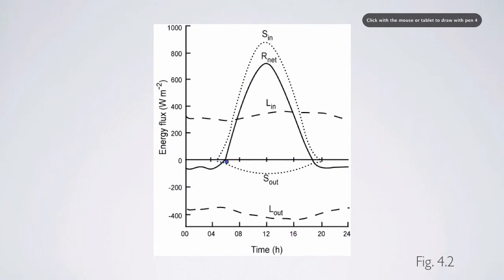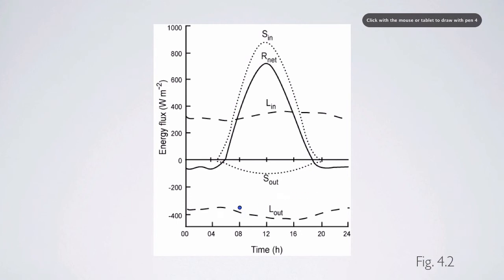The shortwave radiation coming out mirrors the amount of shortwave radiation coming in, but it's a lot lower — that's the amount of reflectance. The amount of longwave radiation going out balances the amount of longwave radiation coming in. Even during the night there's longwave radiation going out of the system. When you add all these up you get balance, but it's important to know that patterns of shortwave radiation vary as insolation changes, and longwave radiation patterns both in and out also vary.